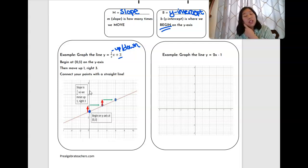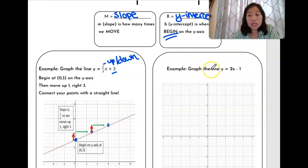We can move to the left if we run out of space on our graph, but typically I always tell students just to move to the right. So this is going to tell us to move up one to the right three up one to the right three and then we're going to connect our lines.